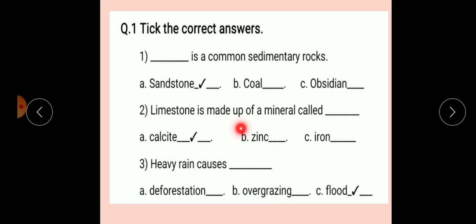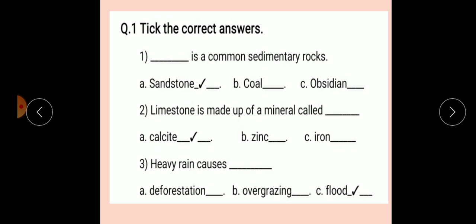Number 2: Limestone is made up of a mineral called dash. Option A: Calcite. Option B: Zinc. Option C: Iron. Correct answer: Calcite. Limestone is made up of a mineral called calcite.